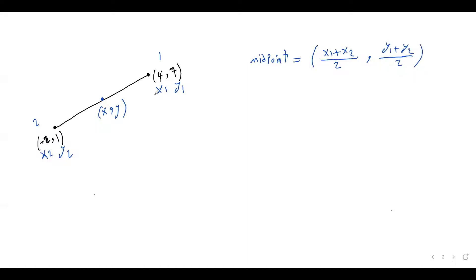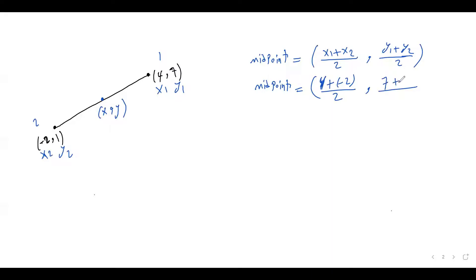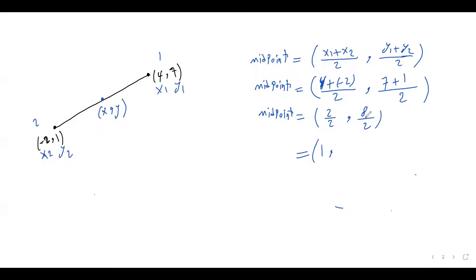All we need to do is plug in these values into the formula. Midpoint equals x1, which is 4, plus x2, which is negative 2, so (4 + (−2)) / 2. And the y coordinate is y1 plus y2 divided by 2, so y1 is 7 plus y2 is 1, divided by 2. Our midpoint equals 4 + (−2), that's positive 2, divided by 2. And the y coordinate is 7 + 1 = 8, divided by 2. The final answer: 2/2 = 1 and 8/2 = 4. This is the coordinate of our midpoint: (1, 4).